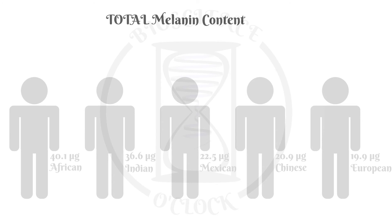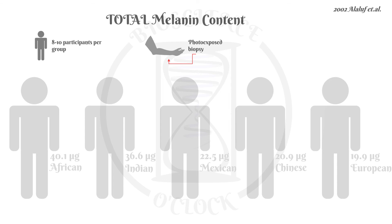Melanin is the skin's pigment, but which melanin-related factors affect our skin tone? In a study published in 2002, a group of scientists measured the total melanin content, as well as the eumelanin and pheomelanin in samples obtained from people from different ethnic backgrounds. Each ethnic group had 8 to 10 participants. The ethnicities were African, Indian, Mexican, Chinese, and European. They used biopsies from the dorsal forearms as photo-exposed skin, and from the volar upper arm as photo-protected skin.